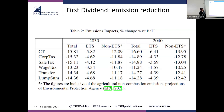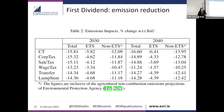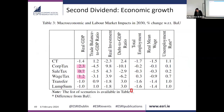Looking at the first dividend — emission reductions — all scenarios show a reduction in emissions. There's a slightly higher reduction in the pure carbon tax scenario because when you start revenue recycling, you stimulate the economy somewhat, which dampens emissions reduction. But overall, we achieve emission reduction regardless of what we do with carbon tax revenues. The first dividend is always achieved.